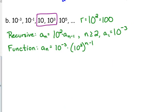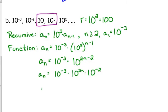Our function rule is a sub n equals the first term, 10 to the negative third, times our common ratio, 10 squared to the n minus 1. I am going to rewrite this one. First, I have a power raised to another power. When you raise a power to another, we multiply. So that's 10 to the 2n minus 2. Make sure you distribute that 2. If we split that up, that's 10 to the 2n times 10 to the negative 2. So we have 10 to the negative 5 times 10 to the 2n.